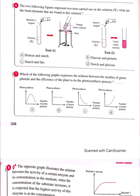Question number 7: Which graph expresses the relation between the number of green chloroplasts and the efficiency of the plant to perform photosynthesis? As the number of green chloroplasts increases, the rate of photosynthesis will increase. The answer is D — photosynthesis efficiency increases as the number of green chloroplasts increases.